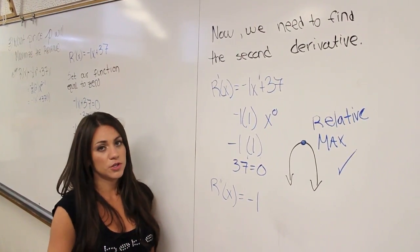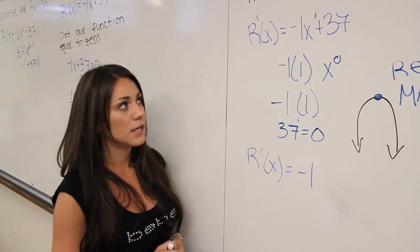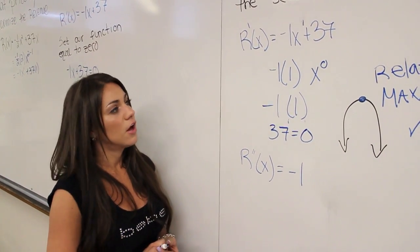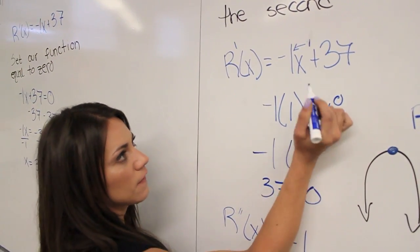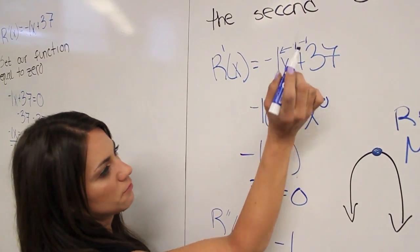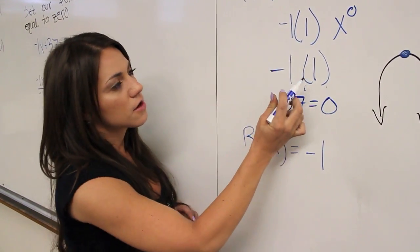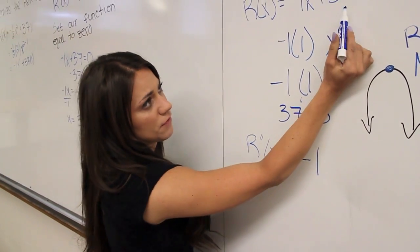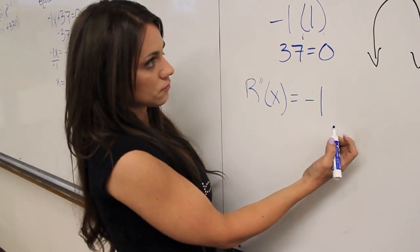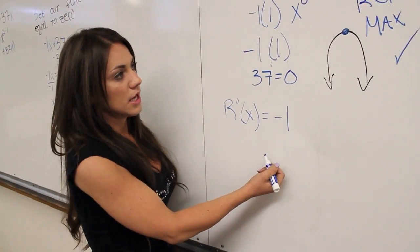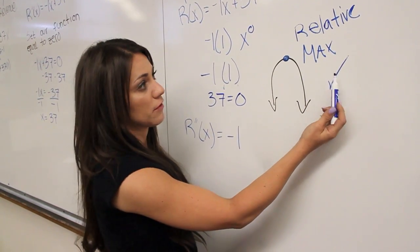Now we need the second derivative to confirm maximum revenue. Taking the first derivative R'(X) equals negative 1 X plus 37, we multiply 1 times negative 1 to get negative 1, and X to the first becomes X to the zero, which equals 1, giving us negative 1. The 37 is a constant, so its derivative is 0. Therefore, our second derivative is negative 1. Because it is negative, the function is concave down, making this a relative maximum — which is exactly the maximum revenue point we want.